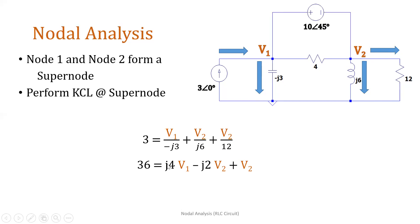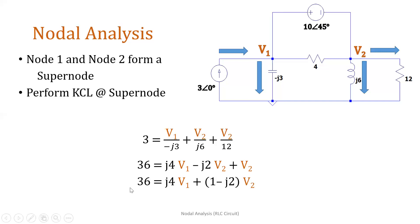We need to get the LCD, which is 12. So 3 over 1 becomes 36. For −j3 multiplied to make it 12 gives j4·V1. For j6 multiplied to make it 12 we multiply by −j2. And 12 to make it 12 times 1. Simplifying, we get: 36 = j4·V1 + (1 − j2)·V2. That is equation 1.